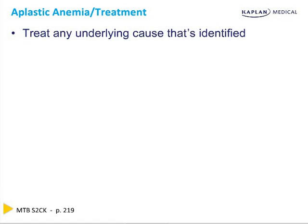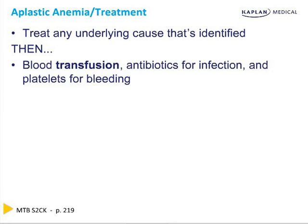You must treat any underlying cause that's identified: treat that lupus, treat the B12 and folate, get rid of the alcohol, treat the cancer. Then, if you still have pancytopenia, also blood transfusions and antibiotics for infection, platelets for bleeding. That is the concrete meaning of supportive therapy — transfuse the anemic, treat the infections, platelets for bleeding.